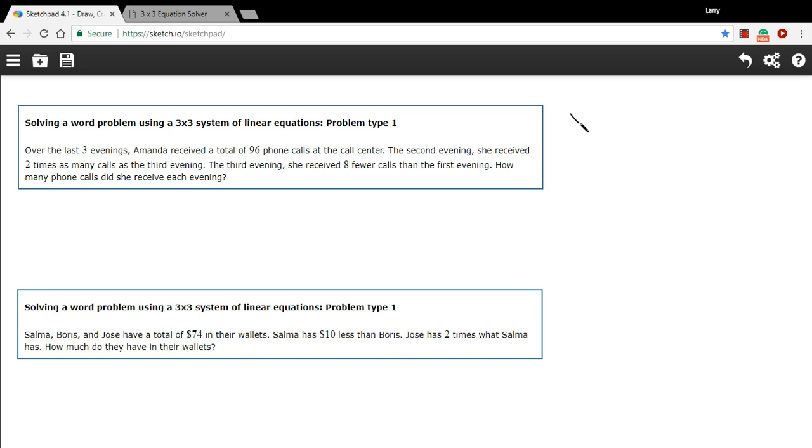I'm just going to call those X, Y, and Z. So those are our three variables. This is the number of calls for the first evening, number of calls for the second evening, number of calls for the third evening. And right away, I can see one equation that I can make. There's a total of 96 calls. So X plus Y plus Z equals 96.